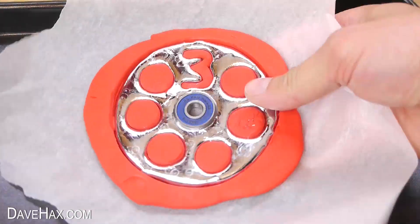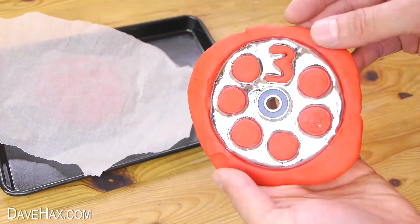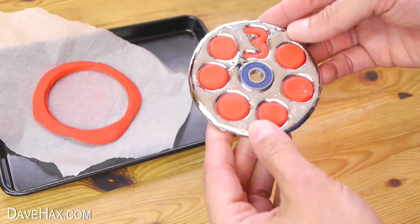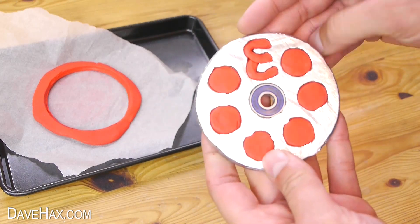Once it had gone solid I picked it up, peeled off the baking paper and removed the outer mould. And that's our 3 million edition gallium fidget spinner. Pretty cool huh?